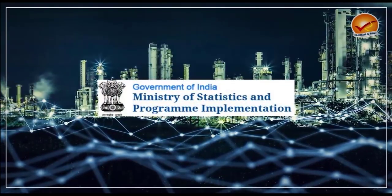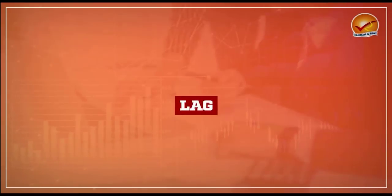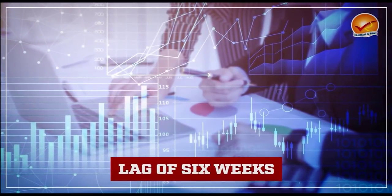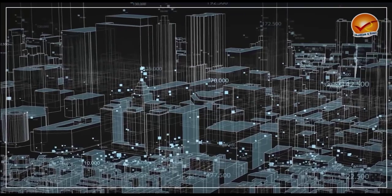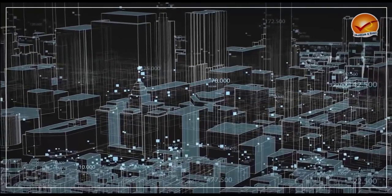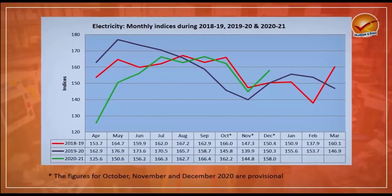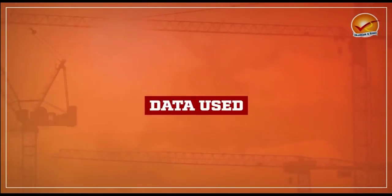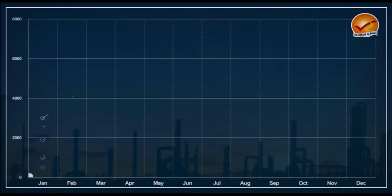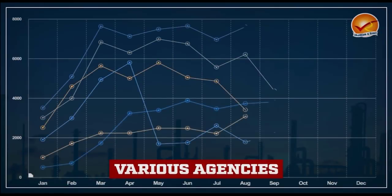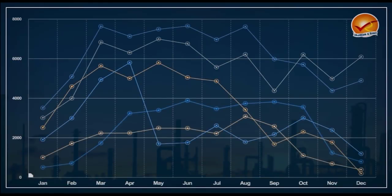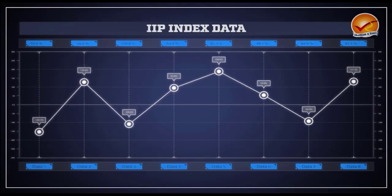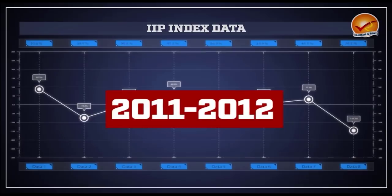IIP data is published every month by the National Statistical Office under the Ministry of Statistics and Programme Implementation. For any month, the IIP is published with a lag of six weeks, as it takes time to compile data from various sources. For example, the IIP data for December is published on the 12th of February. The data for IIP calculation is sourced from various agencies in different ministries or departments. The IIP index is currently calculated using 2011–2012 as the base year.